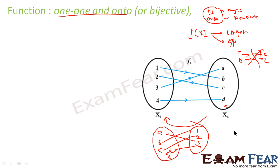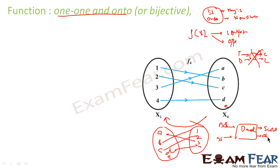Consider another example: your dad is a function. If you get a bad score, you get scolding; if you get a good score, you get chocolates. If you get a good score, your dad won't give you both chocolates and scolding. If that were the case, your dad would not be a function. In a function, for a given input, you will have only one output. Just remember: one input cannot give multiple outputs.